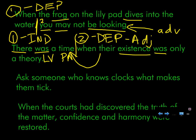Ask someone who knows clocks what makes them tick. Let's see here. Christian, I'm going to throw this to you, and you'll see why in just a moment. This one looks simpler because it's shorter than some of the others. It's actually more complicated. Can you identify noun-verb pairs for me? I'll give you a hint. There are more than two. Knows is a verb. You're correct. But what is the subject connected to that verb? Who knows? So there's one pair.